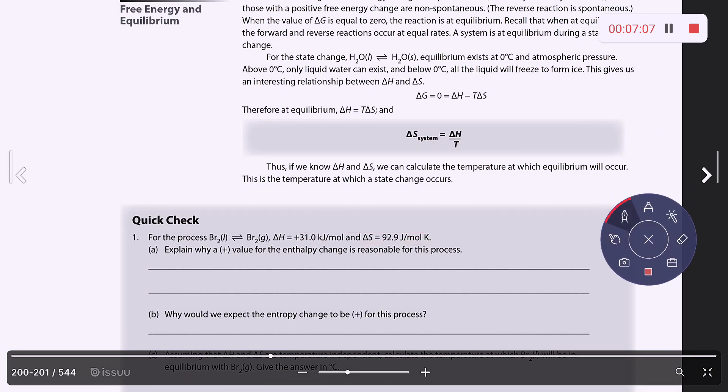At equilibrium, since delta H equals temperature times the change in entropy, that means you would get this equation. And if you know delta H and delta S, then you can calculate temperature at which equilibrium will occur. So I would highlight this so that you can make a reference to using this for the temperature at which equilibrium occurs. And this is the temperature at which a state change occurs.